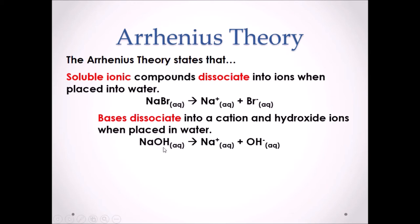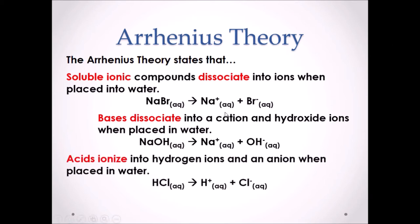According to the Arrhenius theory, bases always contain OH and are therefore ionic compounds. NaOH is soluble in water and will dissociate into Na+ and OH−. Acids ionize into hydrogen ions and an anion when placed in water. For example, HCl, which is a strong acid, will ionize into H+ and Cl−.